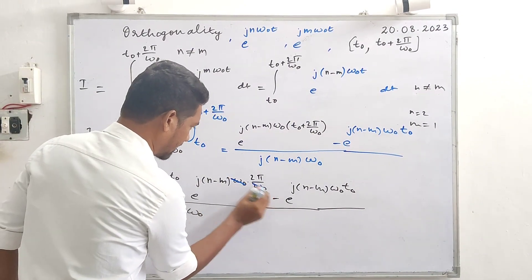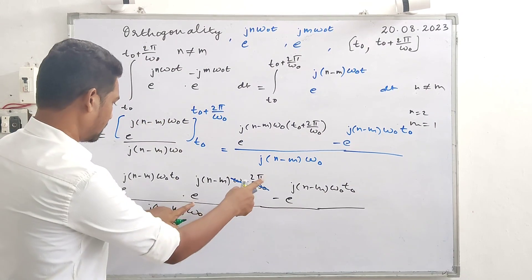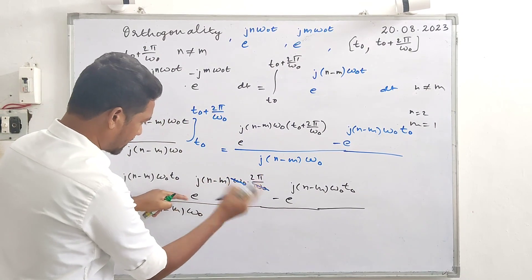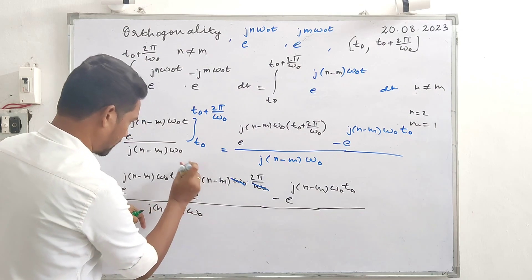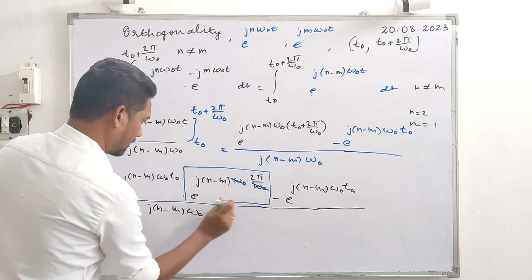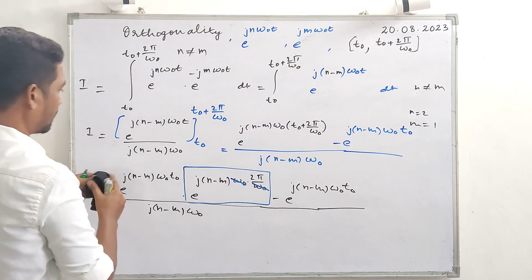Minus e rise to j n minus m omega naught t naught. Something gets cancelled over here - omega naught omega naught cancel. This will be equal to zero. Now focus on this term, rewriting that one.